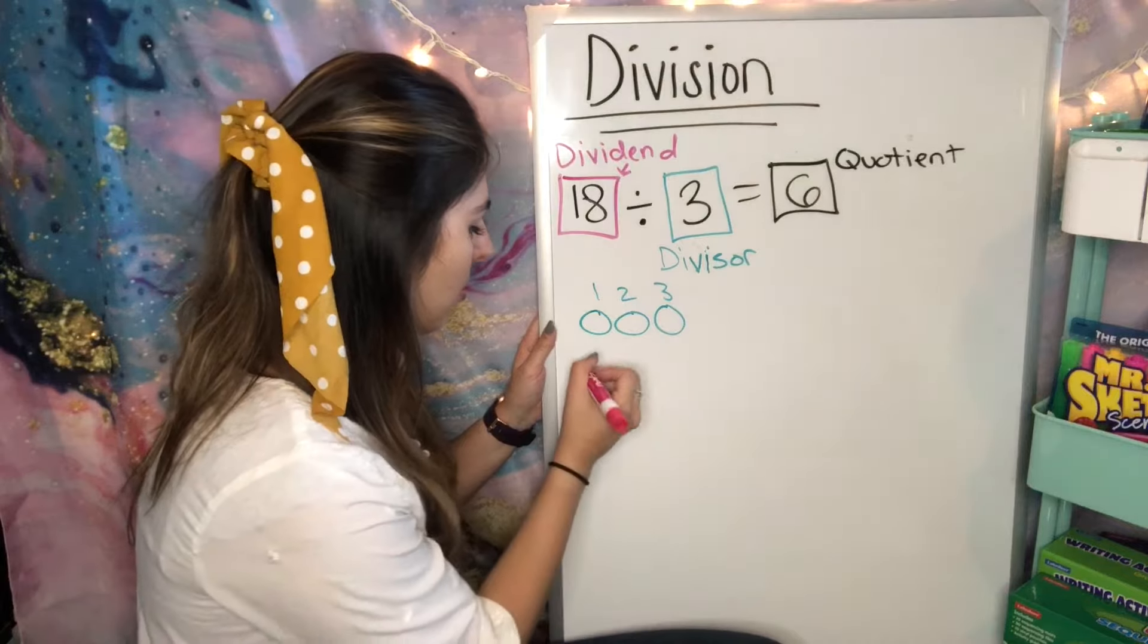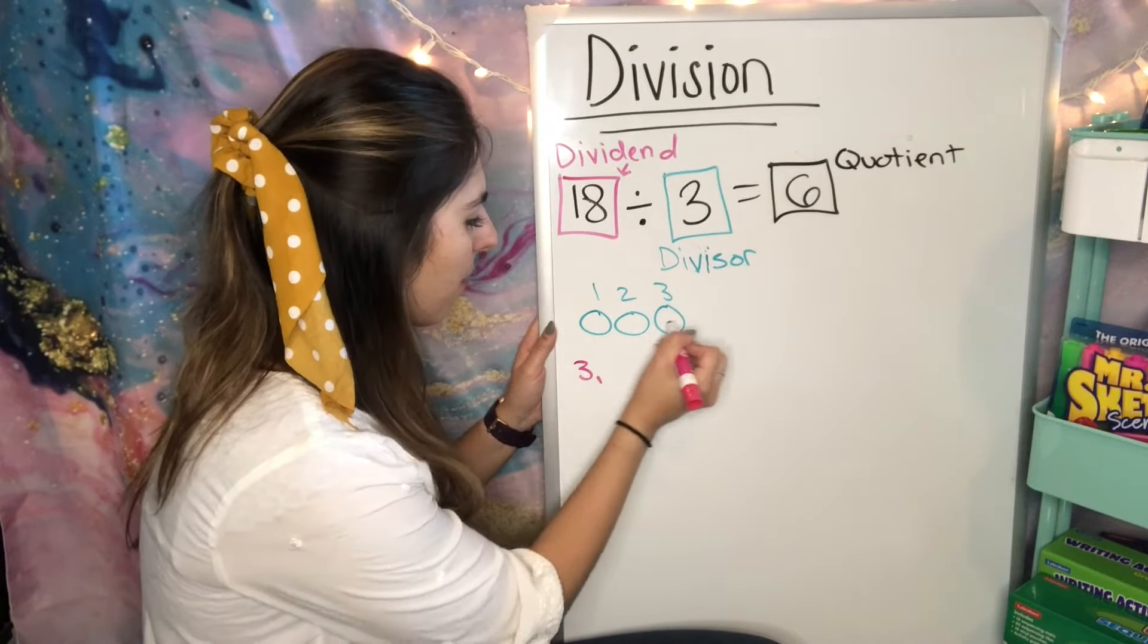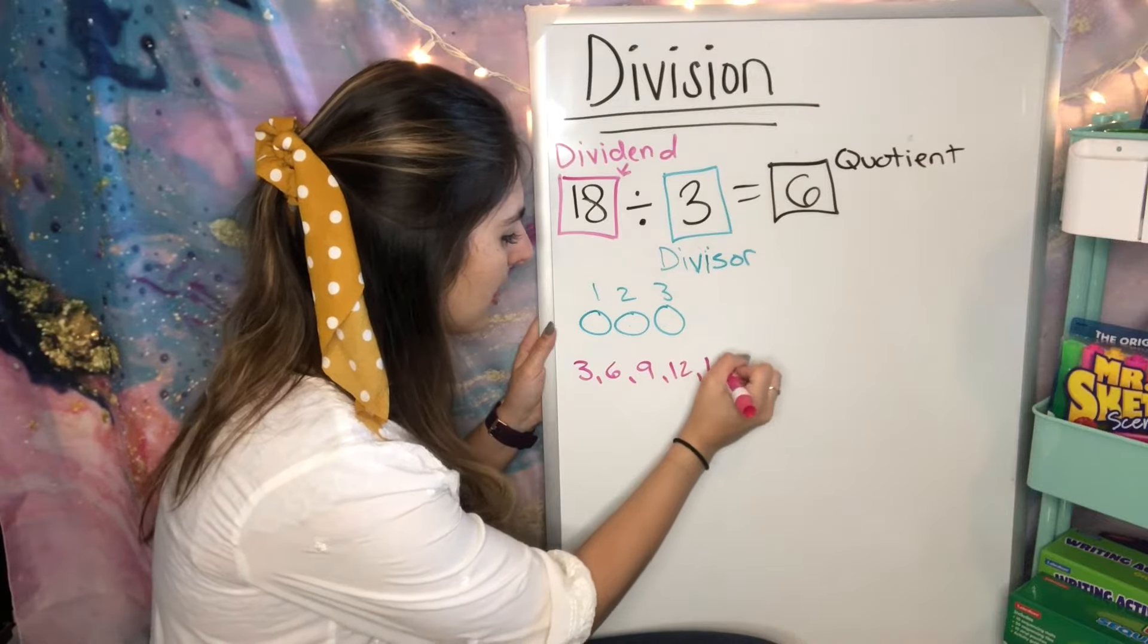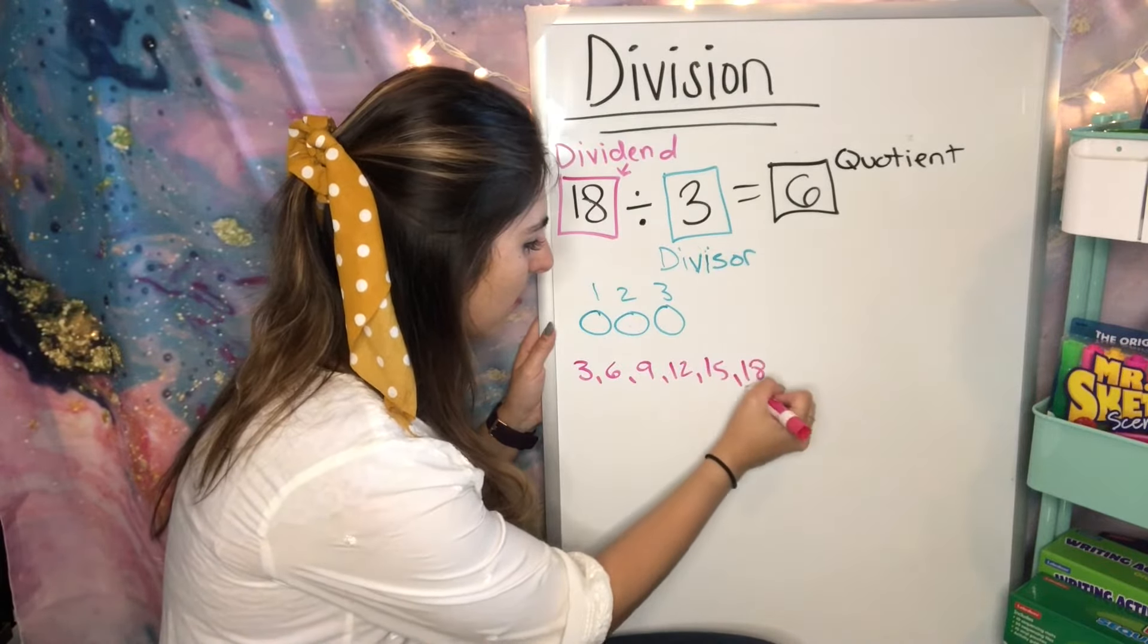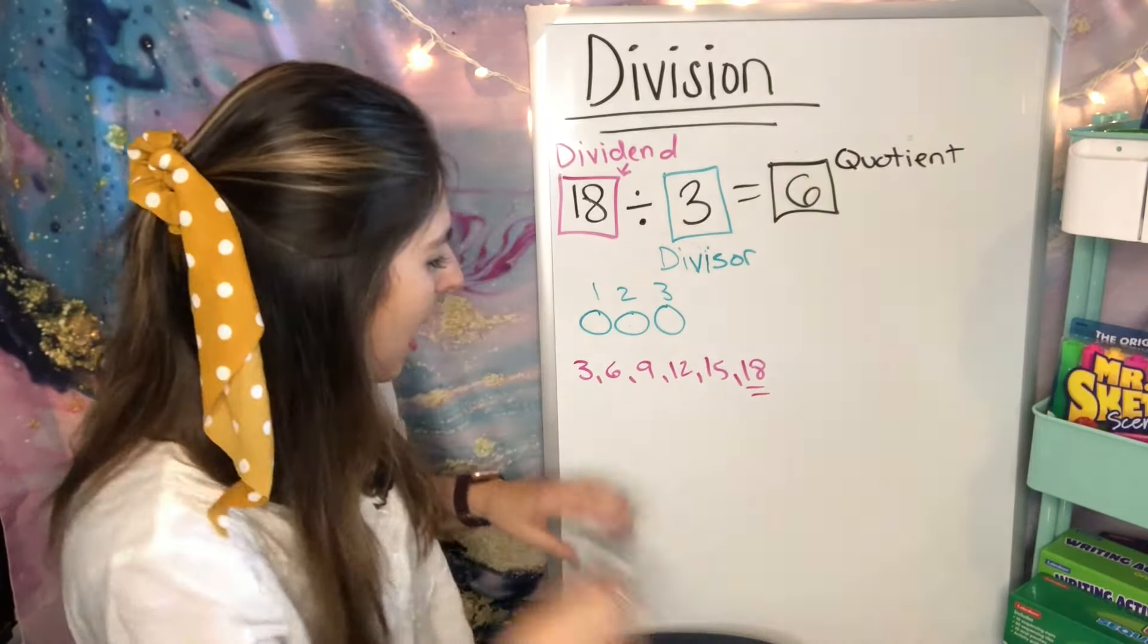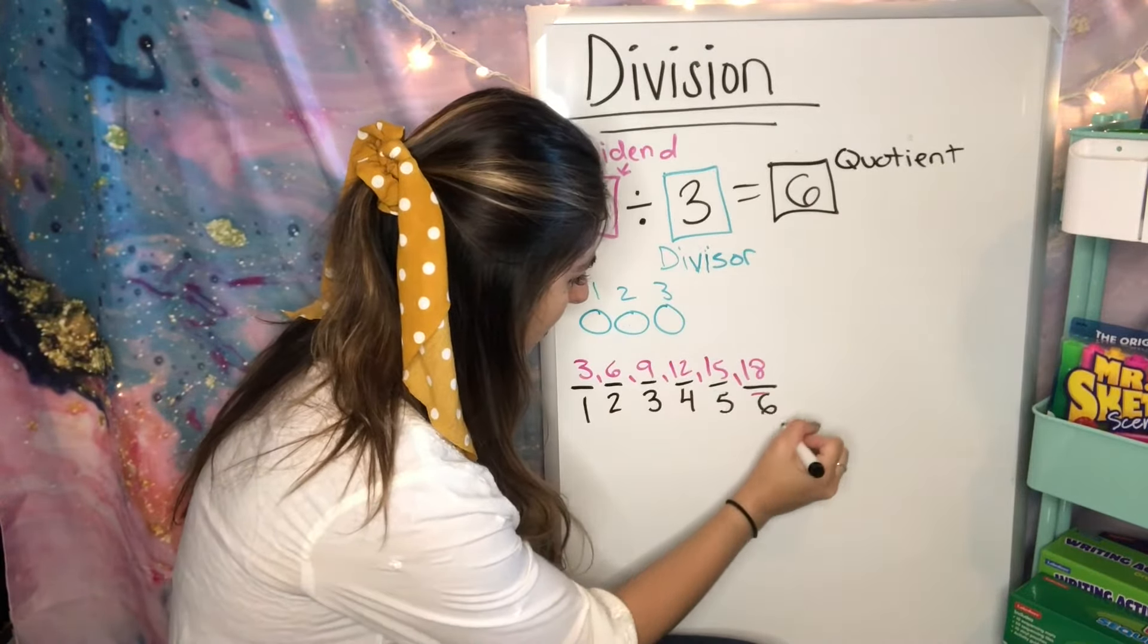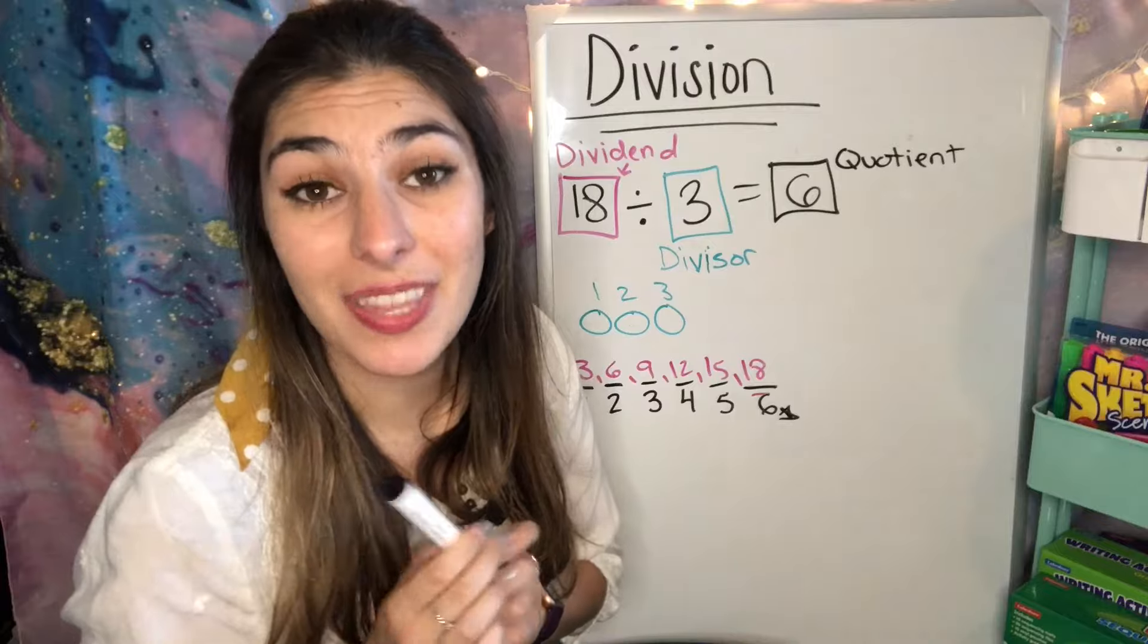So I see 1, 2, 3, 4, 5, 6, 7, 8, 9, 10, 11, 12, 13, 14, 15, 16, 17, 18. I reached that 18. So now I have to count up how many I did. 1, 2, 3, 4, 5, 6. So I know that 6 is my answer. That's my quotient.